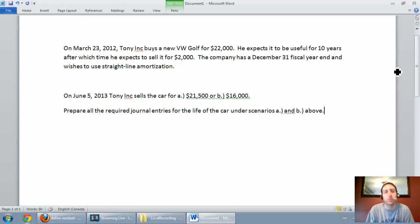Okay, this is the final video of our series on capital assets. In the first three videos we learned how to do straight line amortization, double declining balance amortization, and finally units of production amortization.